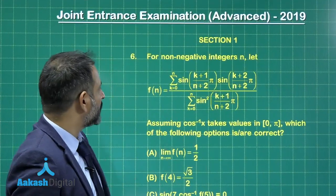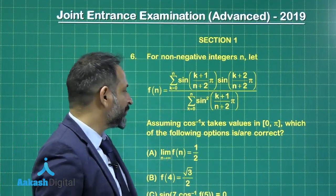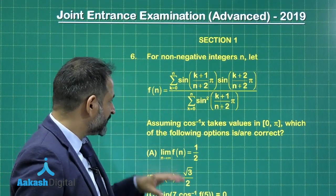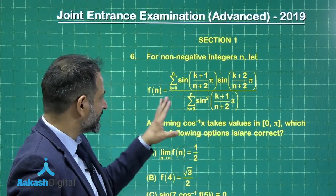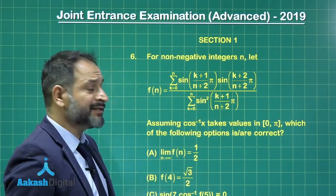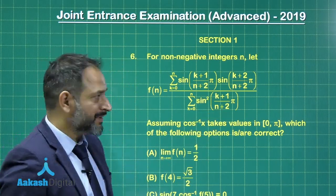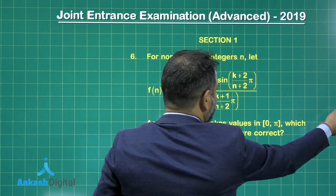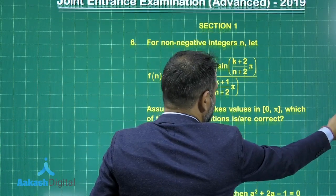Here is problem number 6, again related to trigonometry and summation. A little bit of inverse is also involved, but basically we have to sum up this series. Again, the difference method — a very important method as we have covered in trigonometry — the sine series and cosine series.